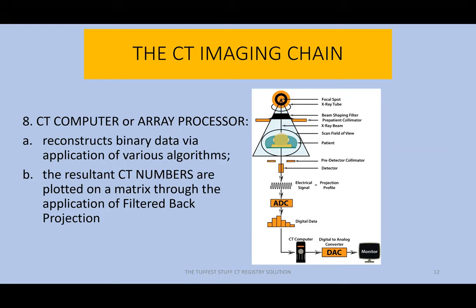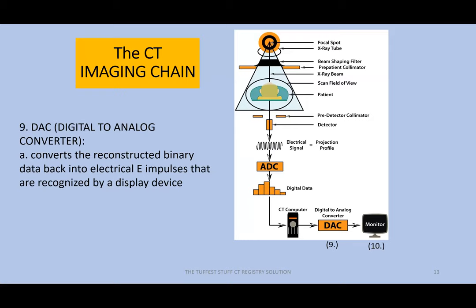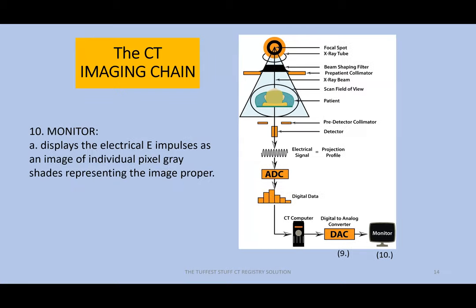And then we've got the DAC — the digital to analog converter. Test answer: the digital to analog converter is responsible for converting the reconstructed binary data back into electrical energy impulses that can then be recognized by the monitor or some sort of display device. It's all because of the fact that we've got a relatively outdated device — the monitor — that is used to display the electrical energy impulses as an image of individual pixel gray shades representing the image proper.